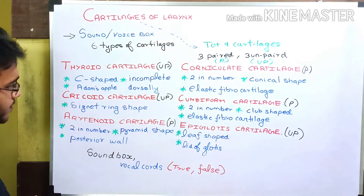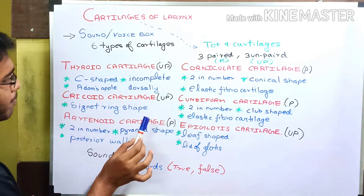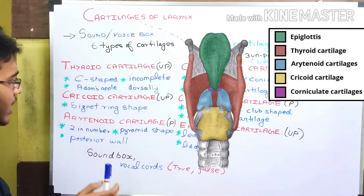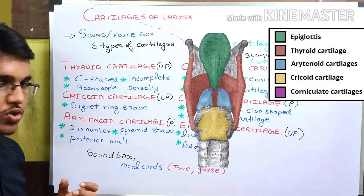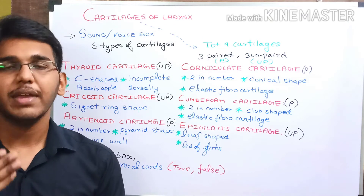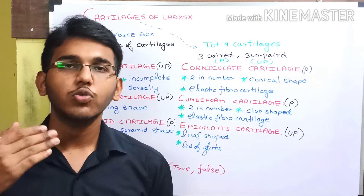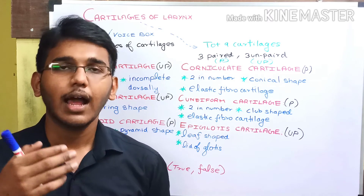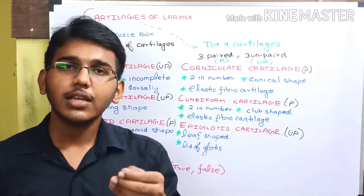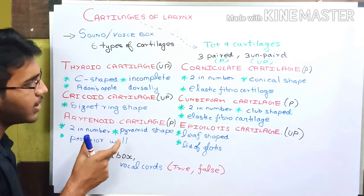Next, we have the arytenoid cartilage. The cricoid and thyroid cartilages are unpaired, but the arytenoid cartilage is a paired cartilage — two in number. It is approximately pyramidal in shape and forms the posterior wall of the larynx. Posterior means behind, or the back side. For example, the front part of the tongue toward the mouth opening is the anterior part, while the back side toward the pharynx is the posterior part.